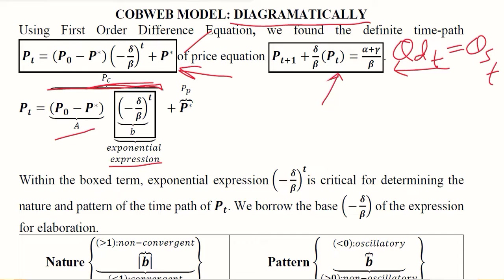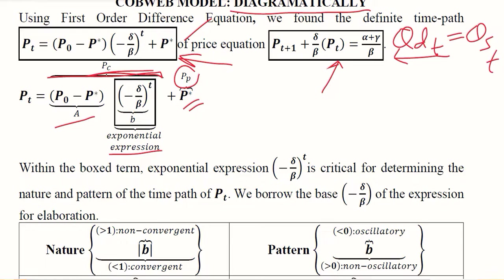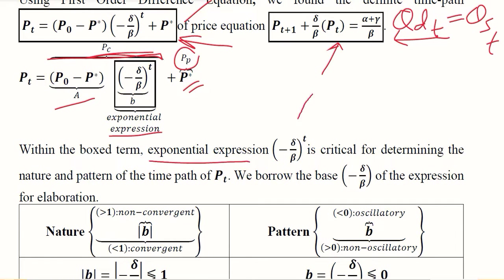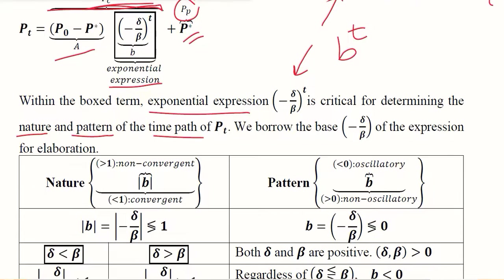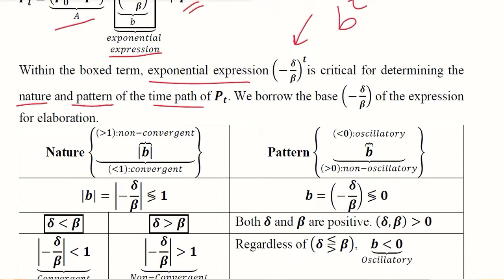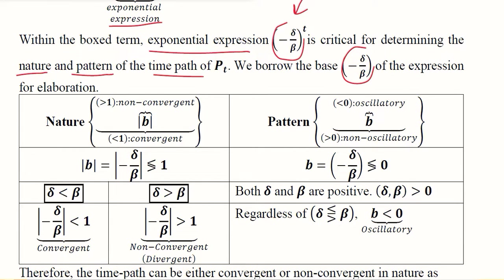This is the particular integral part. The exponential expression, b raised to the power t, determines the dynamic stability as well as the pattern of the time path, because it can be either oscillatory or non-oscillatory. This is an additional feature beyond convergence or divergence, which we have studied in the theory of first order difference equations. We are going to focus on the value of small b.